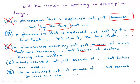Answer D reads: 'which occurred not just because of, but doctors are also...' This is not a parallel structure because the word because appears after the not, but the word because does not appear after the but. So that is not a parallel structure.